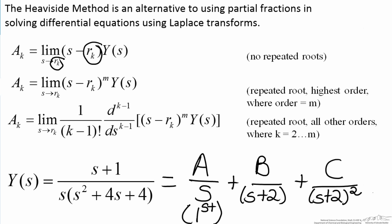B is a repeated root, but it is not the highest order, therefore in order to solve B, we will use the third equation. And finally for C, we have s plus 2 squared, we have the repeated root, and the one that corresponds to the highest order. So therefore we will solve this for C using the second equation.